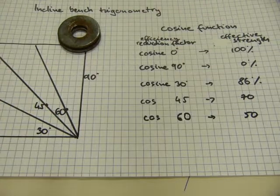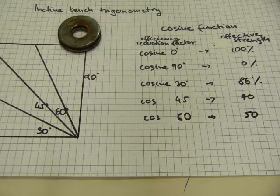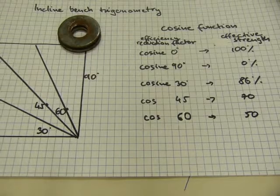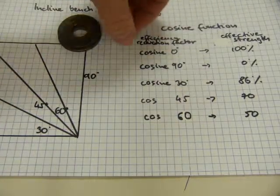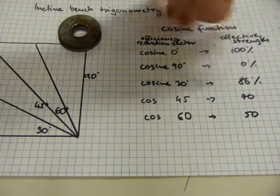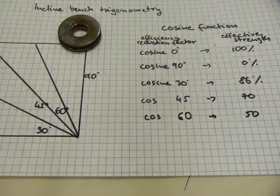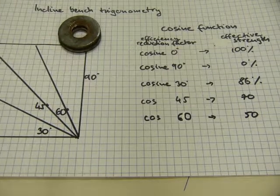Now that would, if we continued with the numbers, mean that at ninety degrees you are zero percent strong. That's not exactly the same because anatomy doesn't work quite like that.